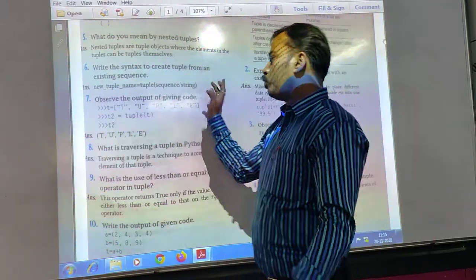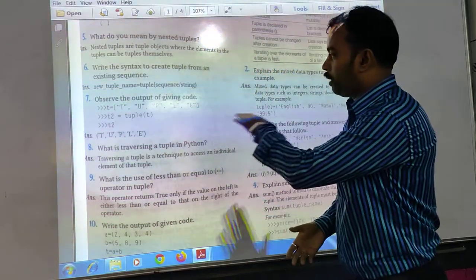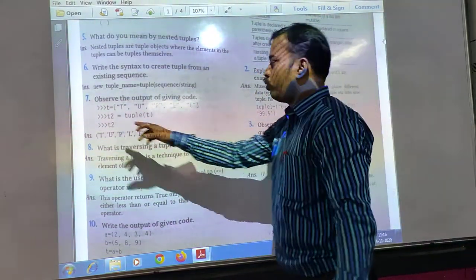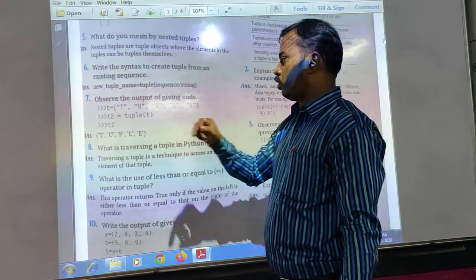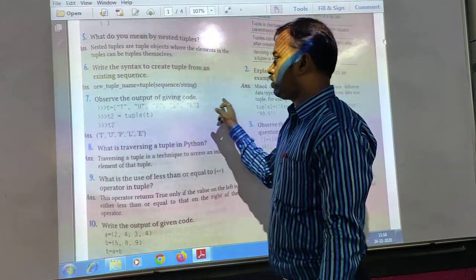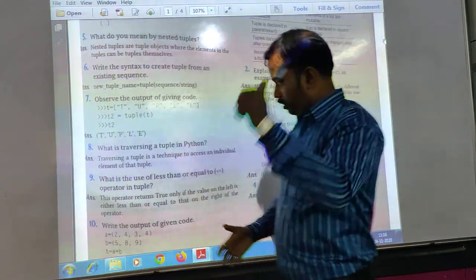Observe the output of the giving code. Suppose you can take a tuple, these are the tuple elements. After that you write t2 equals to tuple of t. Tuple is the method or function that you can use. That means this list is actually converted to the tuple.